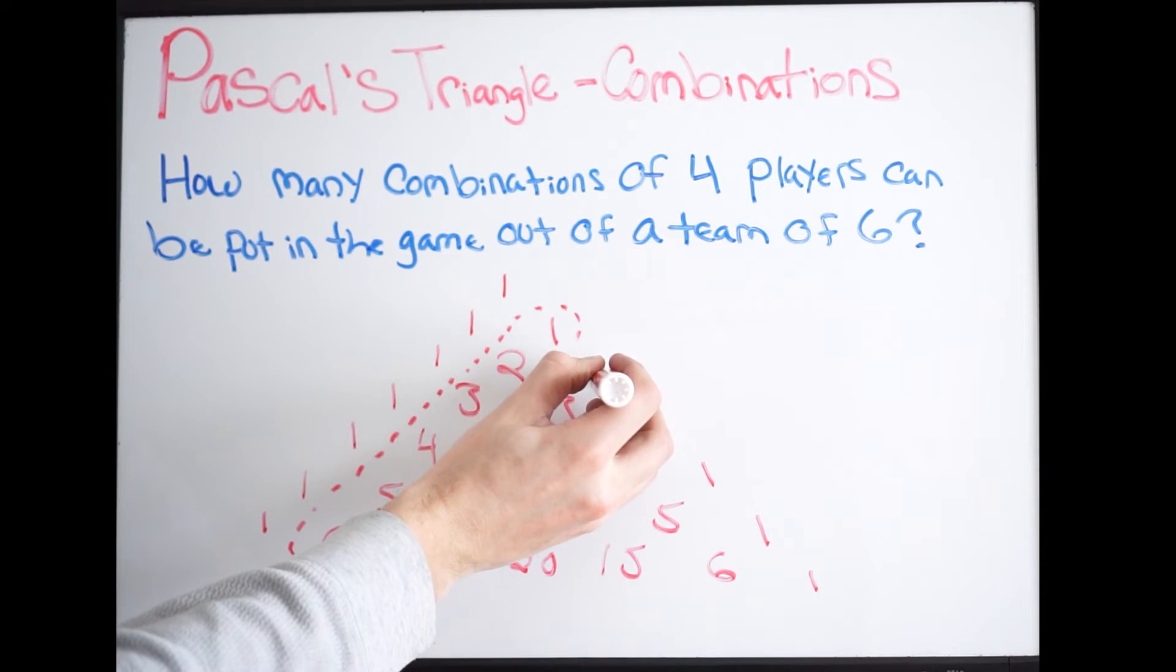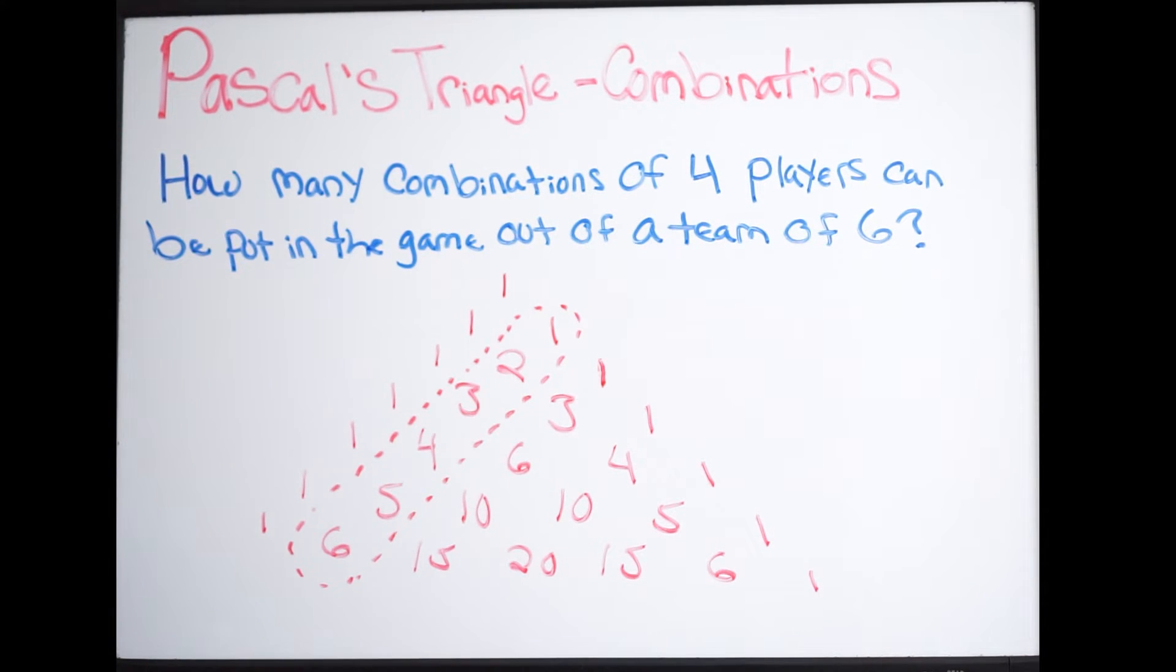So let's get right into this problem. I first want to determine what's my total. It says how many combinations of four players can be put in the game out of a team of six. So our total here is six players. So what I'm gonna do is I'm going to look at my diagonal and I'm gonna look for six. There's six. That's my total.